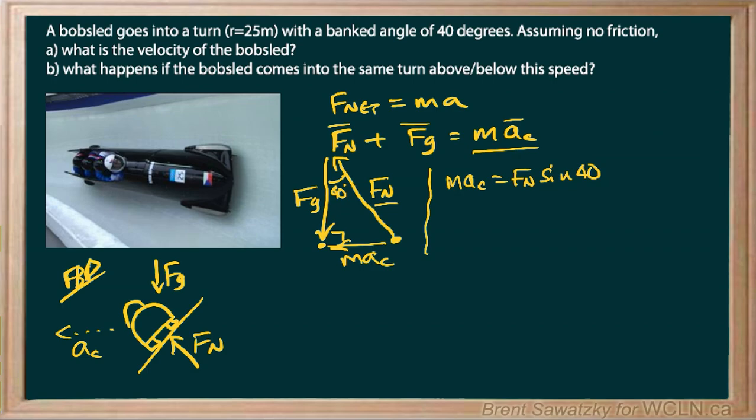And so that can be rearranged a little bit. We know that if we replace A-C with v squared over r, we can say M-v squared over r is equal to fn sine 40.